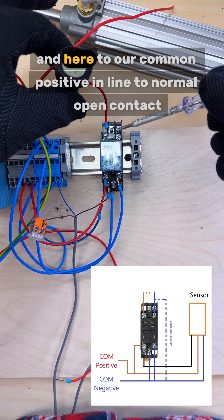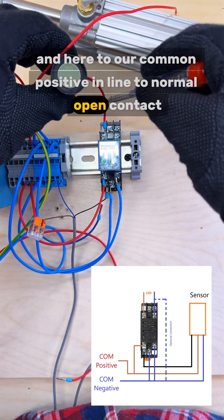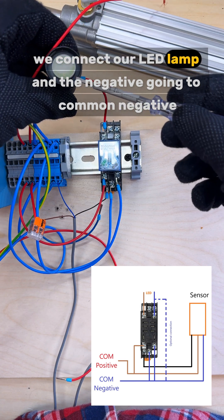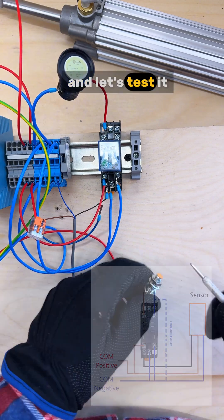Our common positive in line to normal open contact, we connect our LED lamp, and the negative going to common negative. And let's test it.